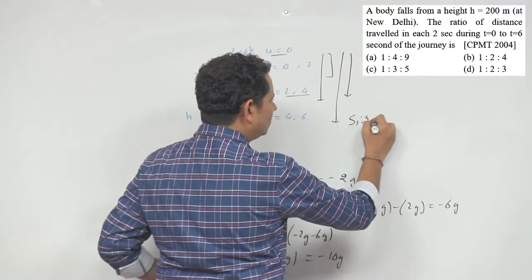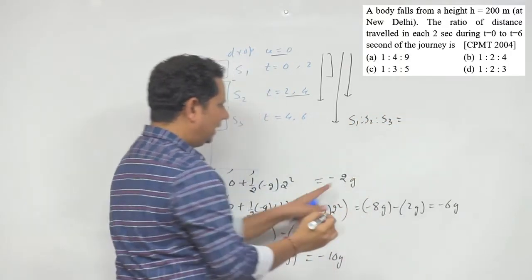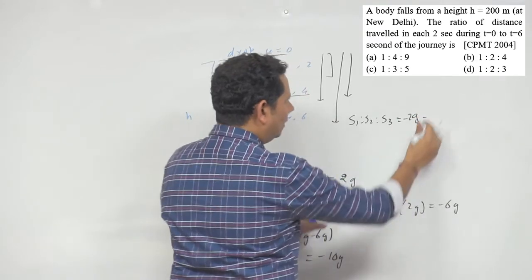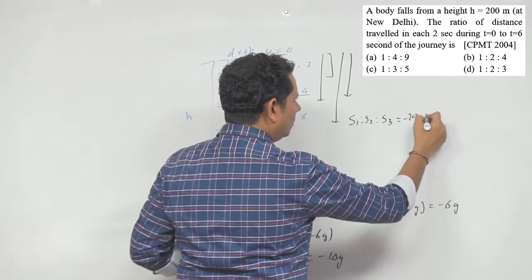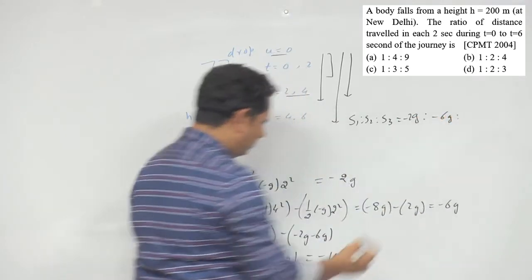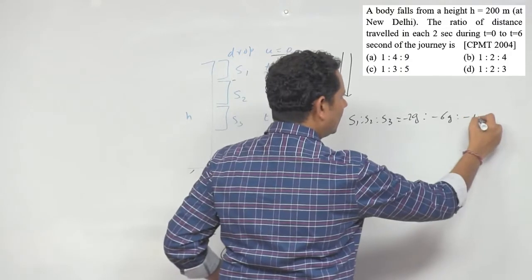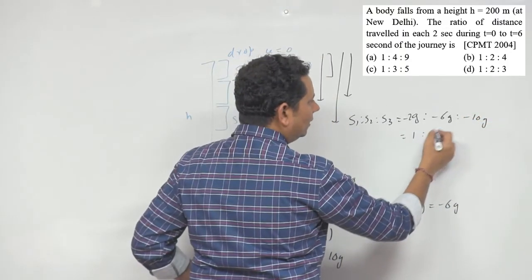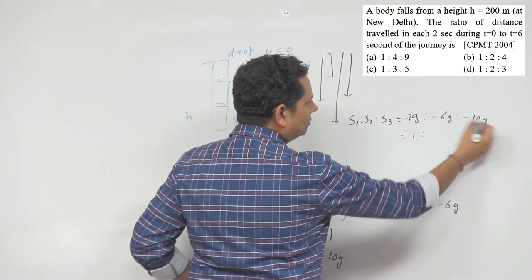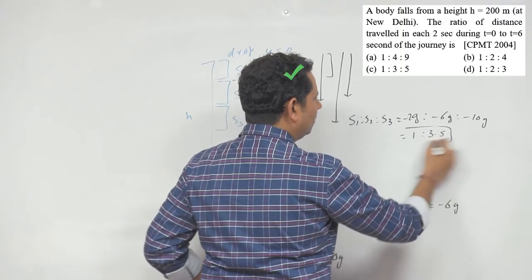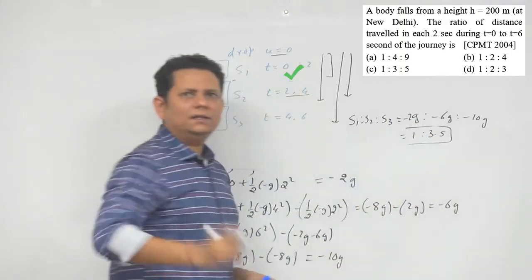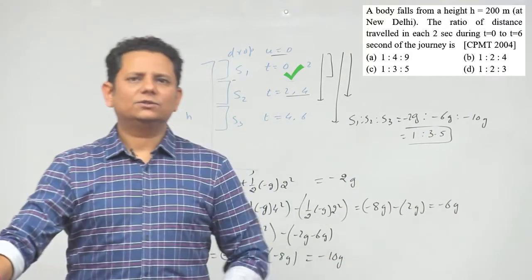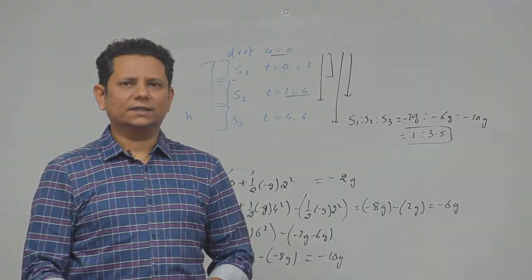The ratio S1 : S2 : S3 = minus 2G : minus 6G : minus 10G. Canceling 2G, we get 1 : 3 : 5. So the final answer is Option C — 1 : 3 : 5 is the correct answer.